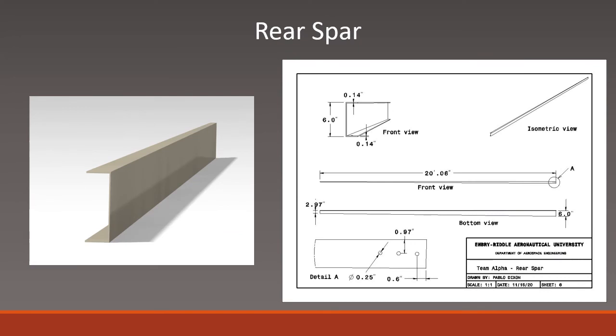The rear spar was designed in a similar manner to the front spar as a C-shaped one-piece machine design. The rear spar is much smaller compared to the front spar as the location of the shear center determined that the majority of the load would be going through the front spar.